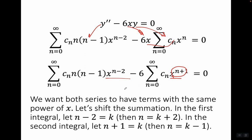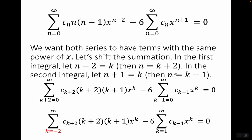In the first sum, we let n minus two equal k, so n equals k plus two. In the second sum, we let n plus one equal k, so n equals k minus one. When we replace n by k plus two in the first sum, this is what we end up with. When we replace n by k minus one in the second sum, this is what we end up with.